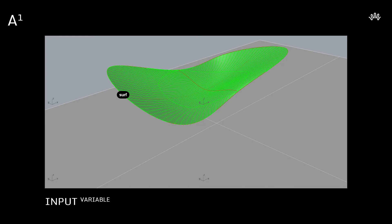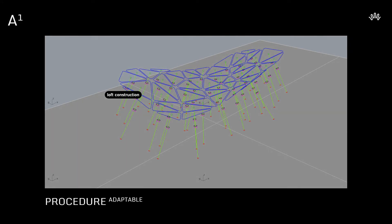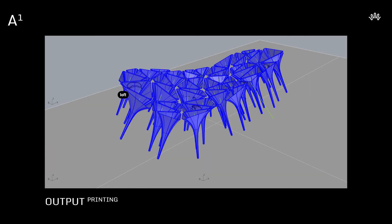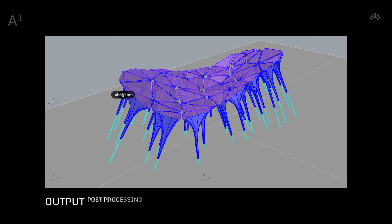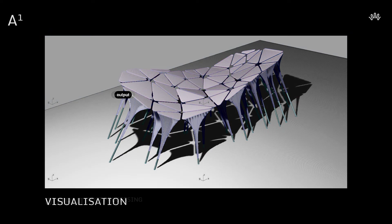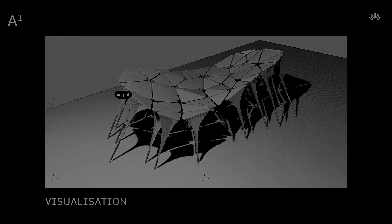For the design, we use a parametric design strategy starting from a surface, which can be variable, to a procedure to develop the output, which is the printing data and the post-processing data, and the visualization to see the object in real.